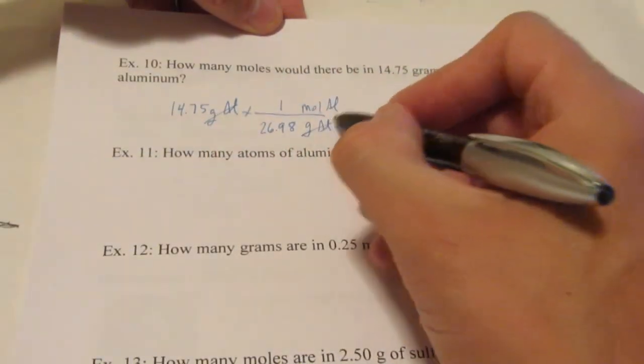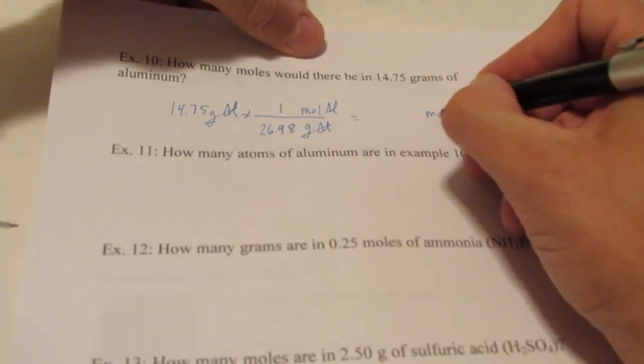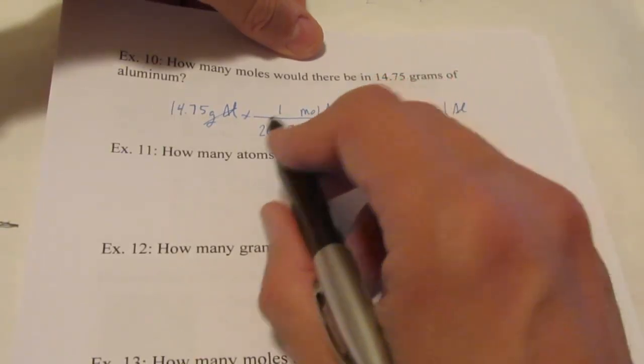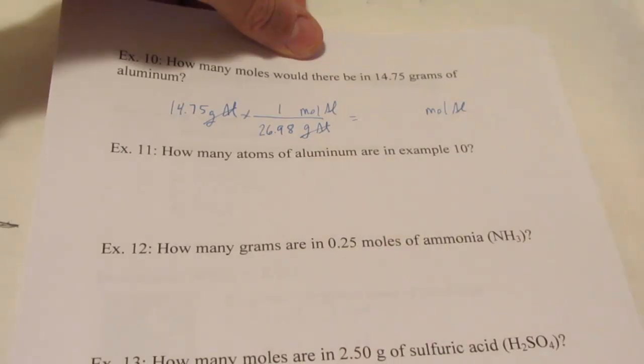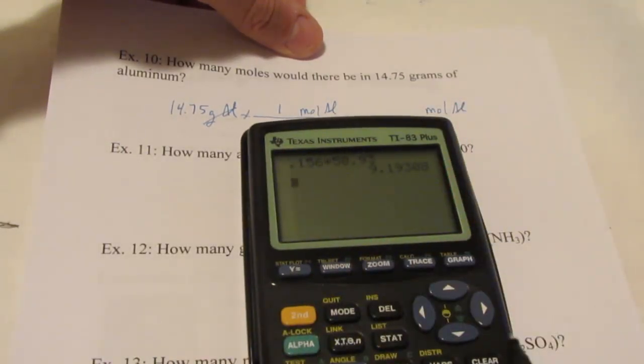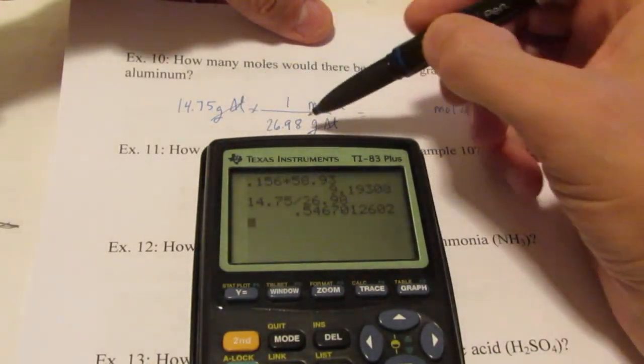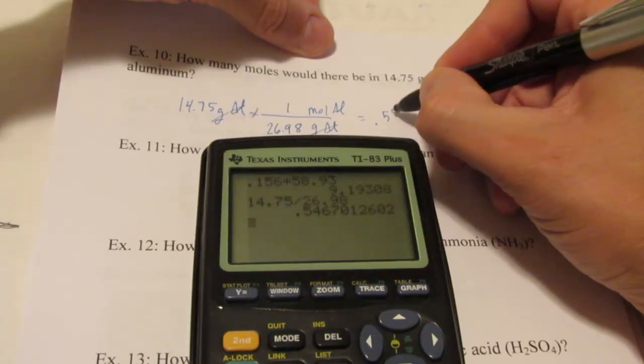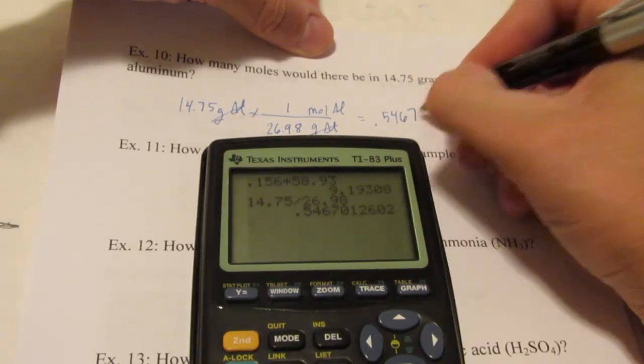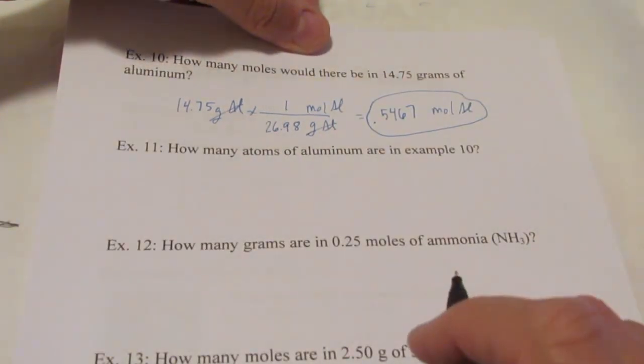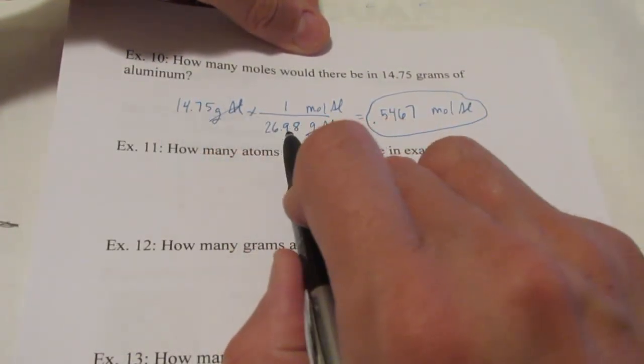So grams will divide out and I will have moles. This time, I'm dividing by a number, or numbers on the bottom other than 1. So I'm going to divide by it instead of multiply. So 14.75 divided by 26.98. Enter. Alright, looks like we're allowed four significant figures this time. 0.5467 moles of aluminum. So I just went from grams to moles.